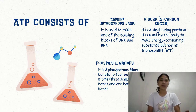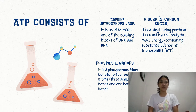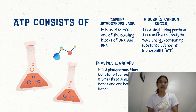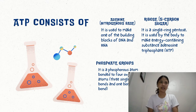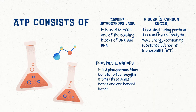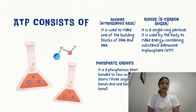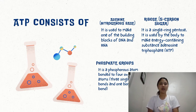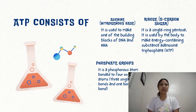What consists of ATP? ATP consists of adenine, ribose, and phosphate groups. ATP consists of one adenine and it is used to make one of the building blocks of DNA and RNA. And it has one ribose which contains five carbon sugar and it is a single ring pentose. It is used by the body to make an energy containing substance, adenosine triphosphate.